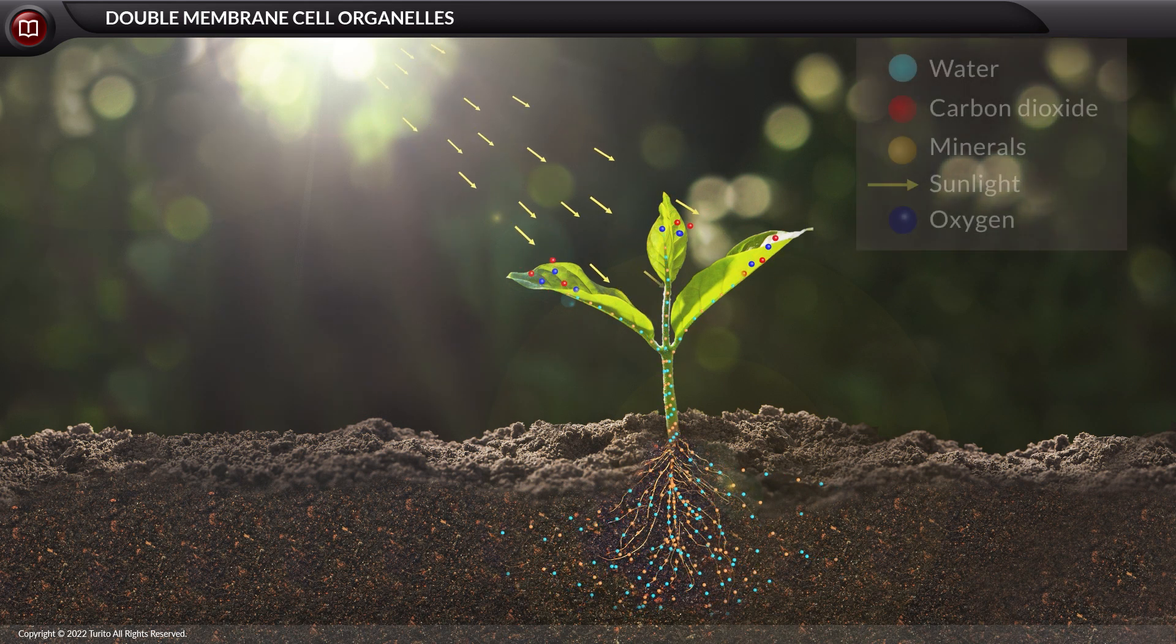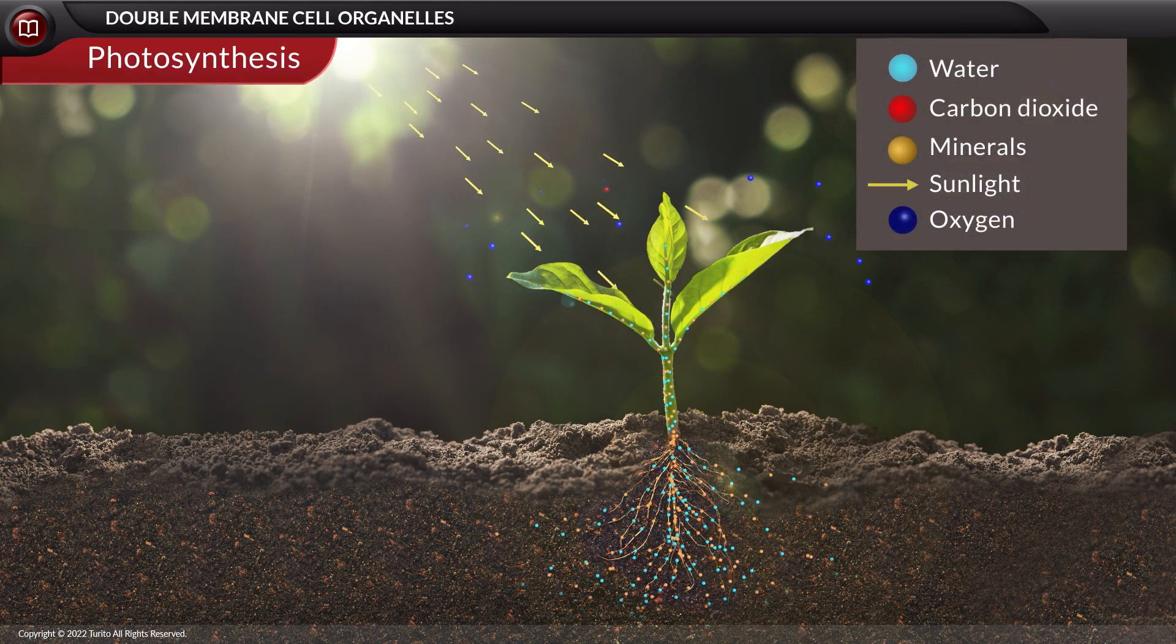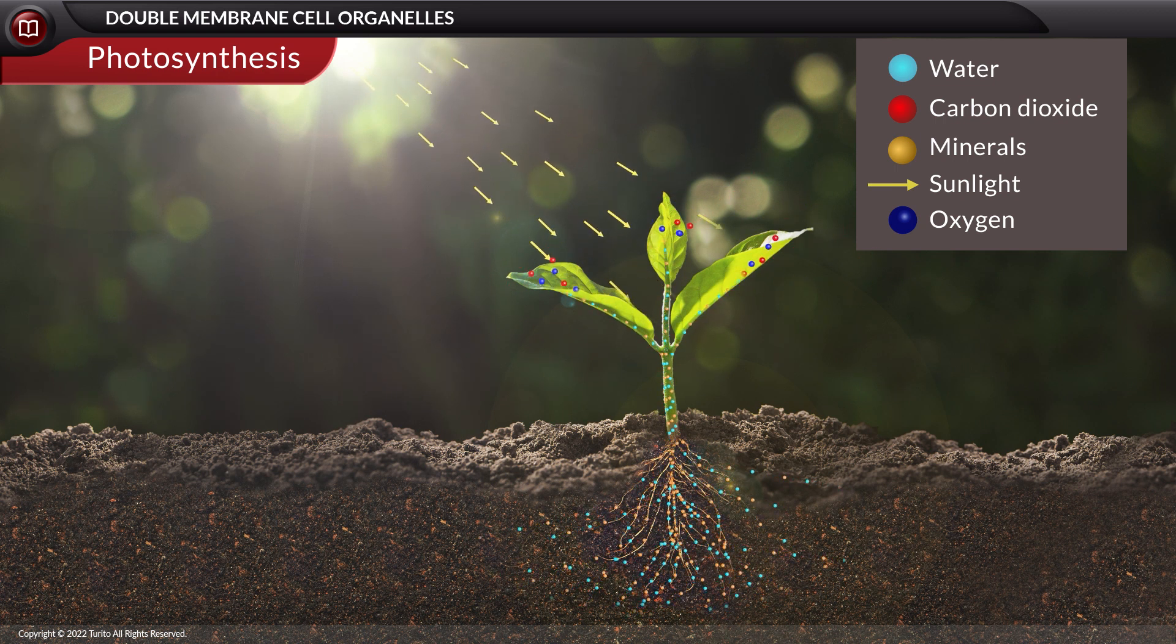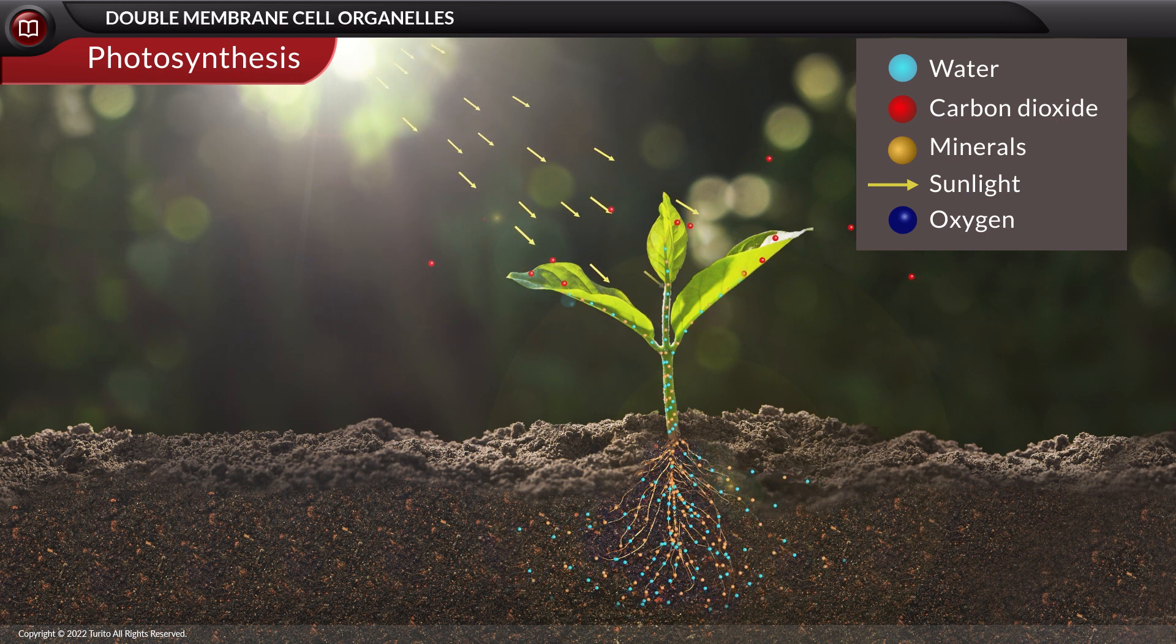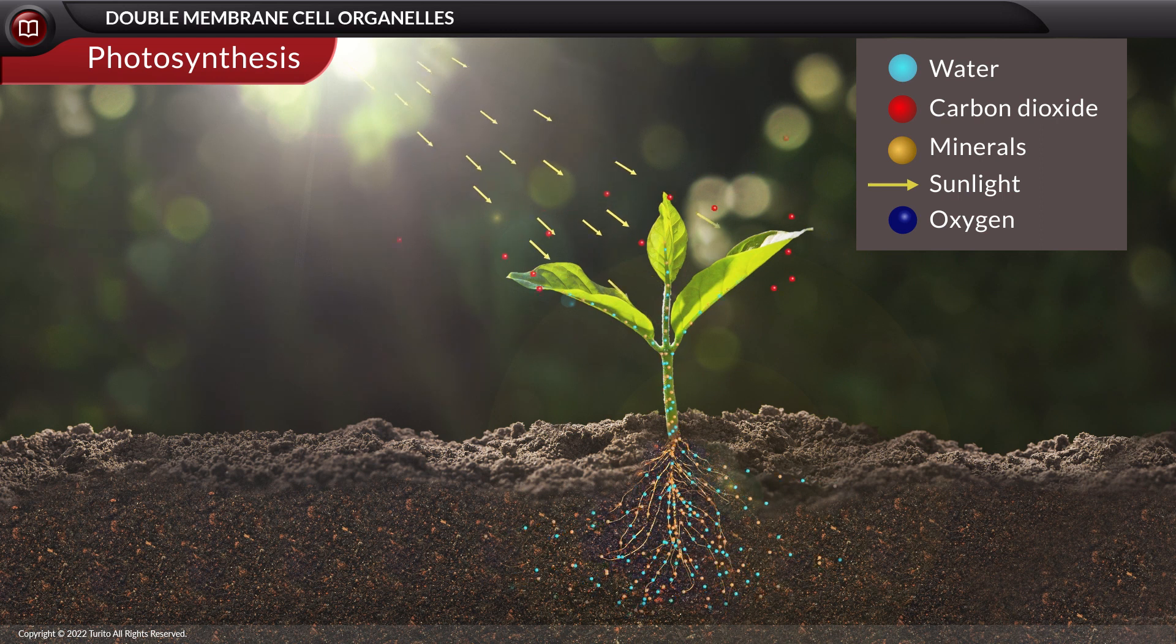Functionally, the chloroplast is involved in photosynthesis. Photosynthesis is a process by which plants transform light energy into chemical energy. Recall the phenomenon of photosynthesis. The energy from sunlight is harvested and used to drive the synthesis of glucose from carbon dioxide and water in the presence of the photosynthetic pigment chlorophyll.